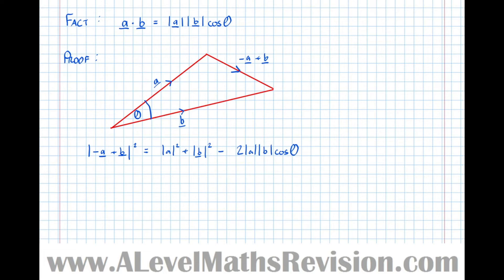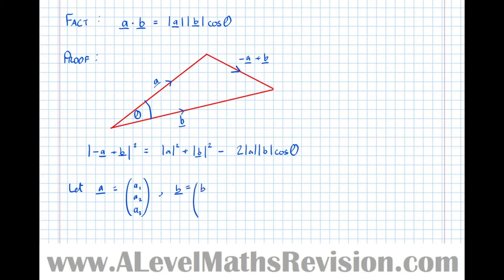And this is basically the essence of the proof. We're going to simplify this now, and it will hopefully give us the result. So first of all, let us define what the vectors A and B are. We're going to let A be the vector with components A1, A2, and A3, and B be the vector with components B1, B2, and B3. Together this implies that minus A plus B, or B minus A, is equal to (B1 minus A1, B2 minus A2, B3 minus A3).